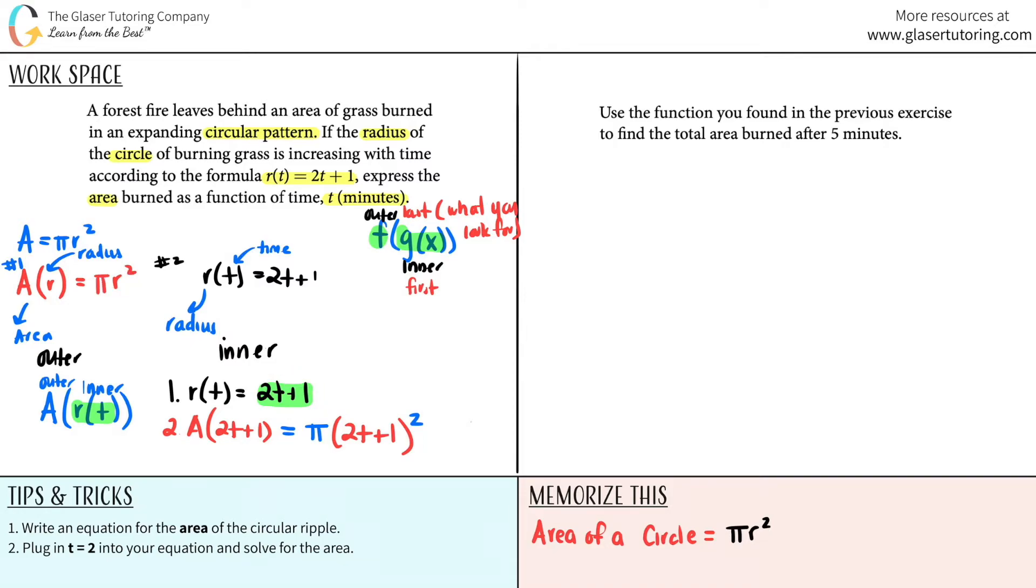So this is the answer to the first question. Express the area burned as a function of time. That is it. So if I just make this nice and pretty, I would just say A(r(t)) = π(2t + 1)². Now, if you want to foil this out and make this even more simplified, you can do that. I'm not going to do that because the next question they want you to solve. So I think it would just be easier just keeping it in this notation.